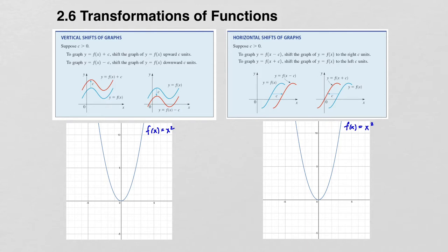We'll start with vertical shifts, and for this we will assume that c is a positive number. If you know what the graph of f(x) looks like, the graph of f(x) + c is just going to shift the graph vertically up c units, and f(x) - c will shift the graph down c units.